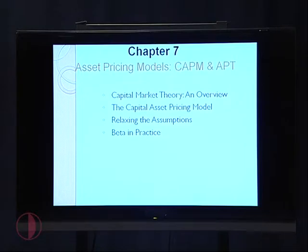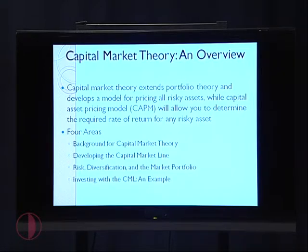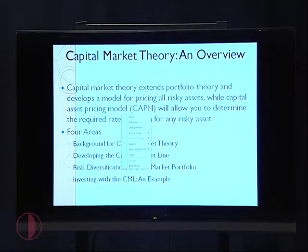What is CAPM? That model helps us to determine the expected rate of return for risky assets. So why only for risky assets? In actual there are two types of assets: some assets include risk, meaning the expected rate of return has uncertainty — there is risk. While other assets have no risk because there is certainty in the expected rate of return. The main objective for the capital asset pricing model is to allow you to determine the required rate of return for any risky assets.